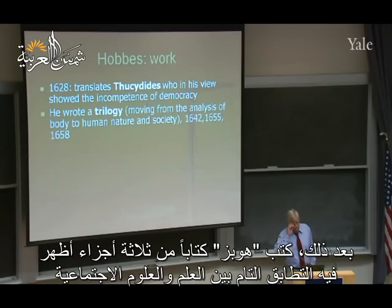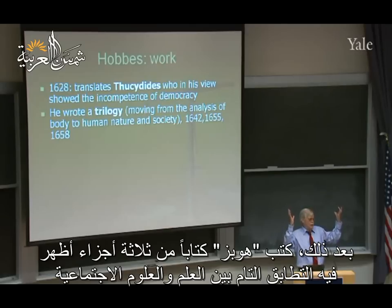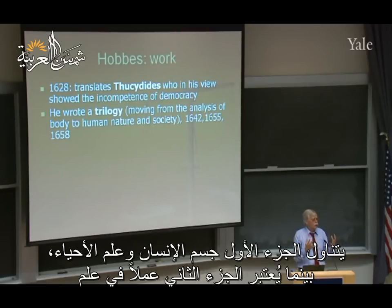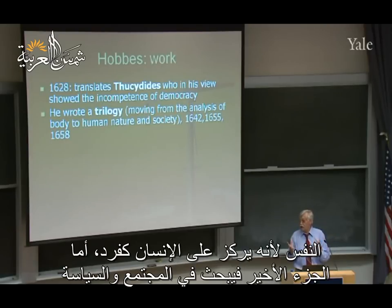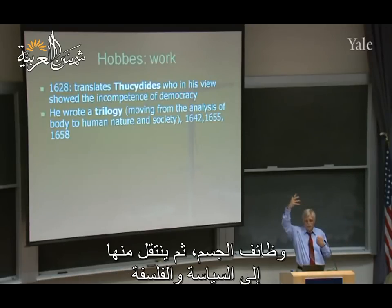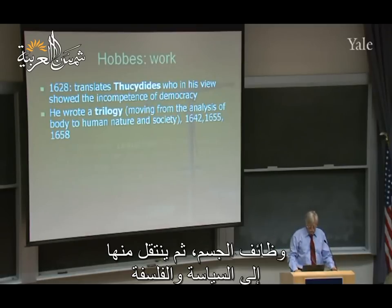His first work was a translation of Thucydides — he liked Thucydides because he thought he showed why democracy doesn't work. He's an absolutist, a conservative. Then he wrote an interesting trilogy that again shows the unity of sciences and social sciences. The first volume deals with the human body — biology. The second works on the individual — it is really psychology. And the last one works on society and politics. He thinks the way to understand human existence is to start with bodily functions and move from bodily functions to politics and philosophy.